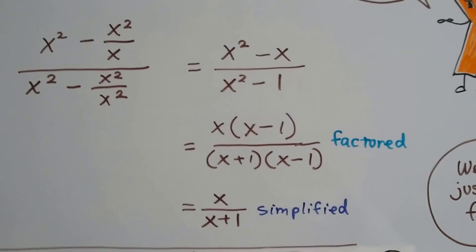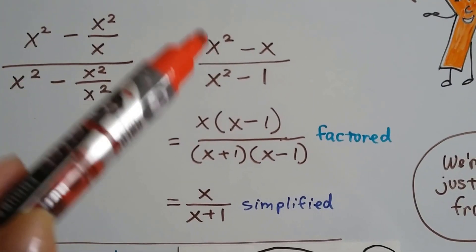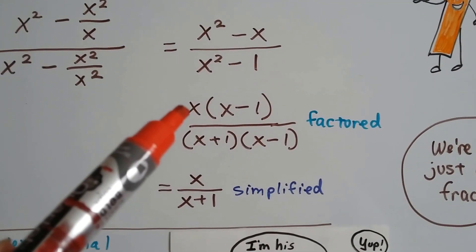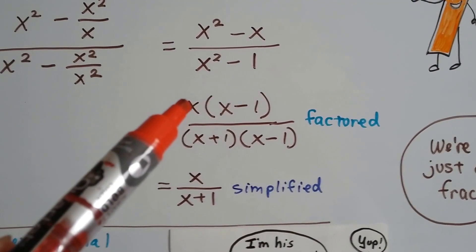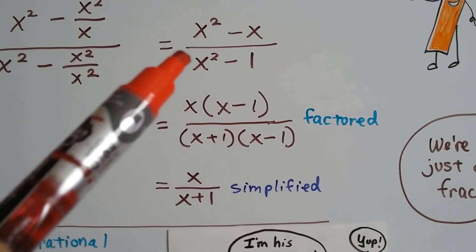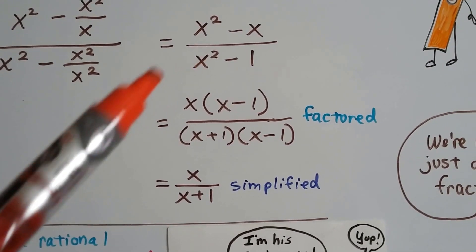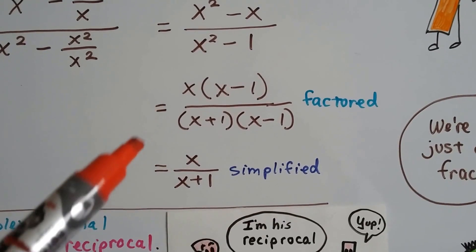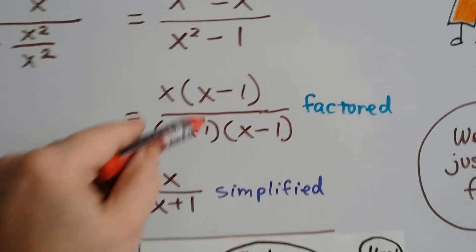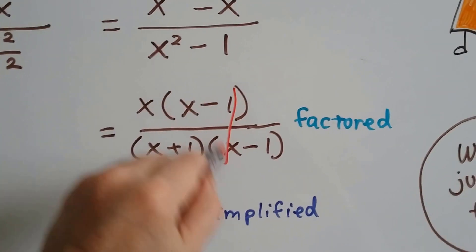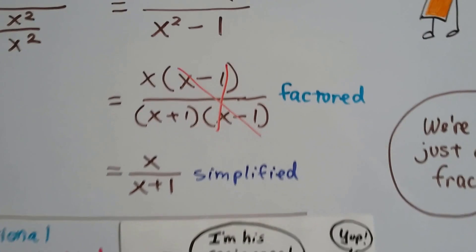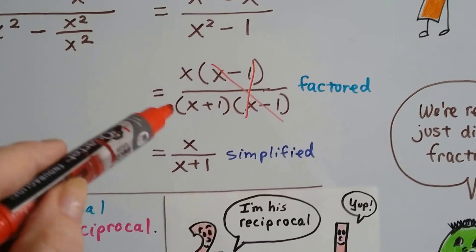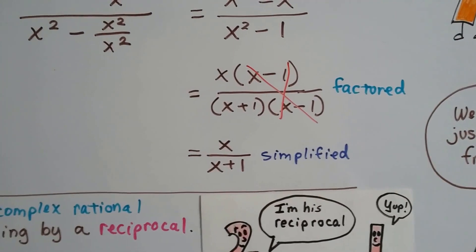So now we're here, and we can factor this. This x squared minus x factors to x times x minus 1. And the denominator factors to x plus 1 times x minus 1. Now, we can cancel out — this x minus 1 over x minus 1 cancels out as a 1. And all we're left with is x over x plus 1. And it's simplified.